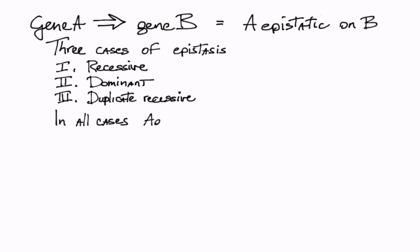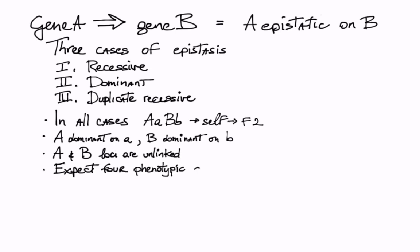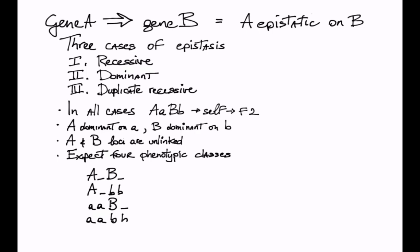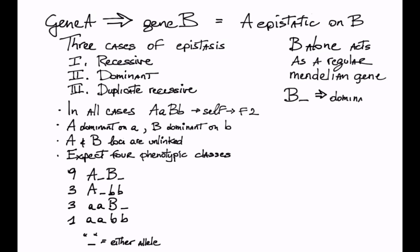In all cases, I will deal with the phenotypes in F2 individuals formed by selfing a double heterozygote with big A little A big B little B genotype. The following assumptions apply: Big A is dominant to little A, big B is dominant to little B, and the A and B loci are unlinked. We expect four phenotypic classes: one that has at least one big A and one big B allele, another with at least one big B, a third with little A little A and at least one big B, and a fourth with little A little A little B little B, the double recessive homozygote. The underlying mark refers to either of the two possible alleles. In all cases, B can act as a regular Mendelian gene affecting a character for which there is a dominant and a recessive trait.